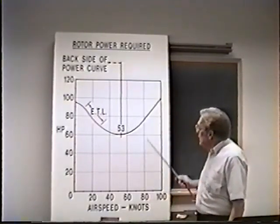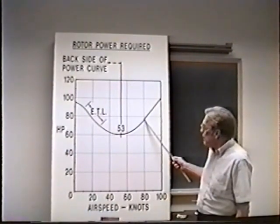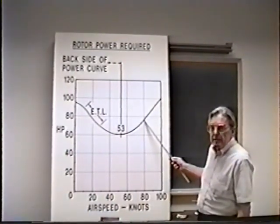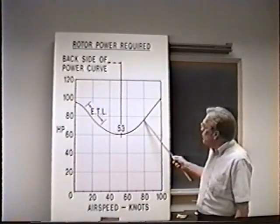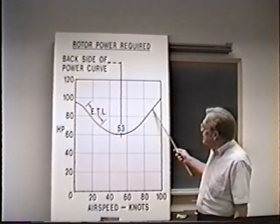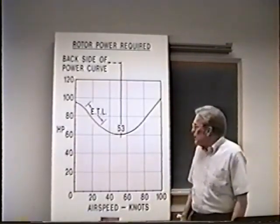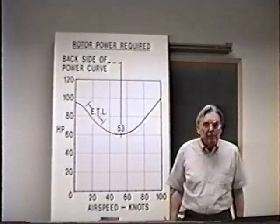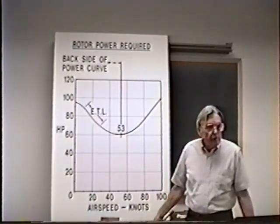For instance, if I'm trimmed out at 80 knots, it takes 77 horsepower to maintain 80 knots. If a gust or turbulence were to momentarily speed me up to 90 knots, it would take 87 horsepower to maintain 90 knots. But I only have 77 horsepower pulled in. So the helicopter is going to slow back down.